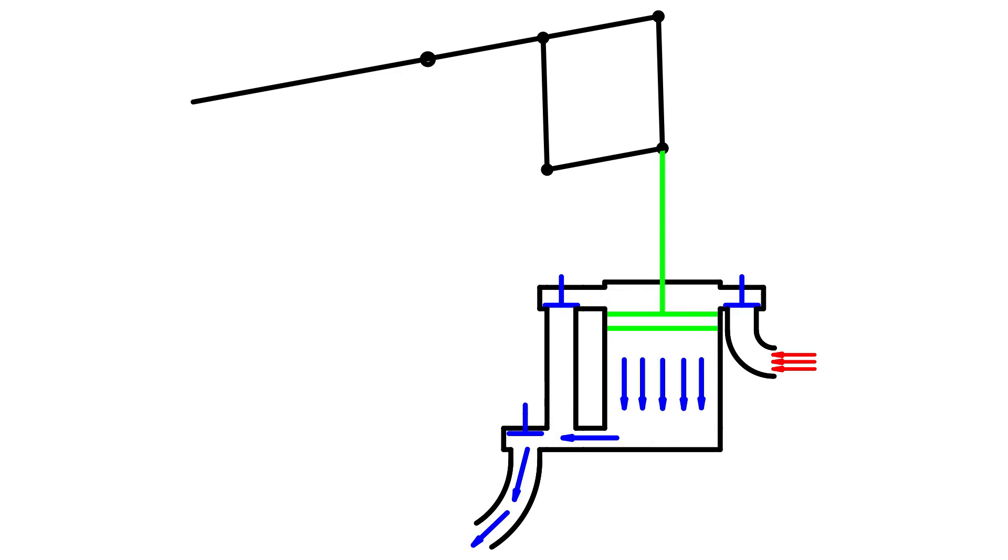The equilibrium valve is closed, the exhaust valve opened. At the same time, cold water is injected into the condenser, which is not shown. Thus, the steam condenses and a vacuum is created.